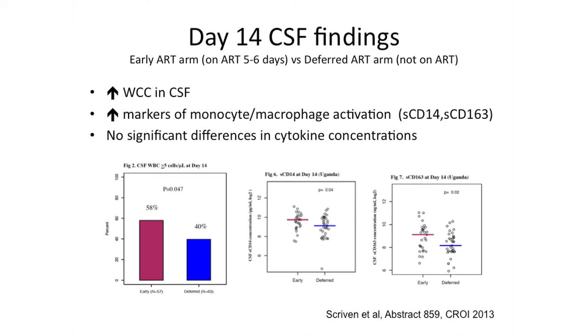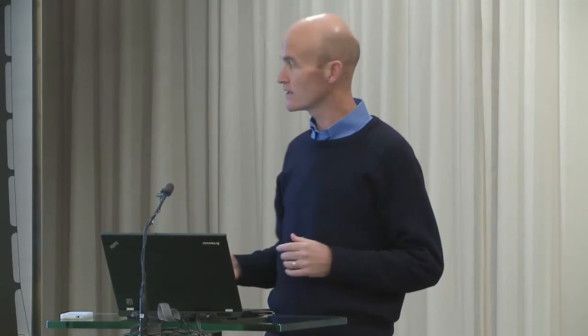What data do we have to support this? Lumbar punctures done at day 14 in the COAT trial — when patients had been on ART for just five to six days in the early ART arm, while the deferred arm was not yet on ART — showed that patients in the early ART arm had higher CSF white cell counts at day 14 and increased markers of monocyte activation: soluble CD14 and soluble CD163. We didn't see a cytokine storm in the CSF — no elevation of TNF, interferon gamma, or interleukins — but we did see increased inflammation in the CSF in terms of cells and monocyte markers, suggesting early ART was turning on certain inflammatory pathways.